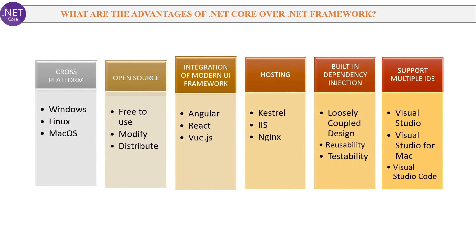Next question: What are the advantages of .NET Core over .NET Framework? First advantage is .NET Core is cross-platform, which means it can run on multiple operating systems like Windows, Linux and macOS, but .NET Framework can only run on Windows. Second advantage is .NET Core is completely open source, which means it is free to use, easily modifiable and easily distributable, whereas .NET Framework is not open source.